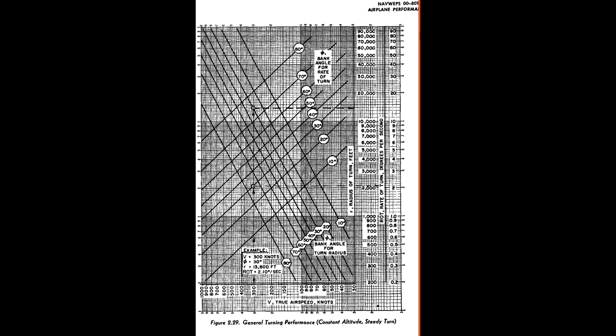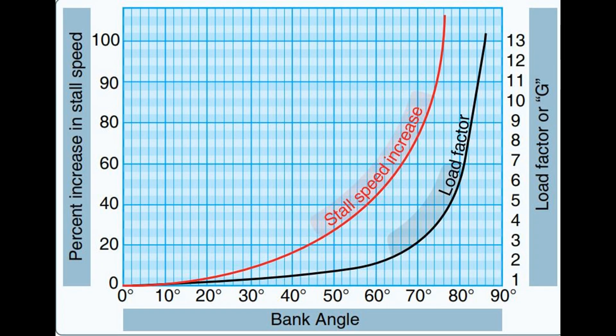The first question we need to answer is how much bank angle we can use in a 7G turn. The answer comes from another chart: 81 degrees. In a constant altitude coordinated turn, G load varies with bank angle. Notice the difference between a 7G turn and an 8G turn is only one degree of bank angle. No pilot can hold bank angle within one degree for an entire 180-degree turn while sustaining 7G's — that's another reason I'm comfortable using the 7G limit, even if the actual rating for the plane is 7.5 or whatever it might be.